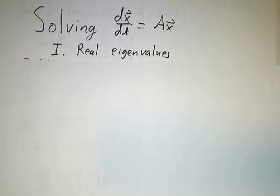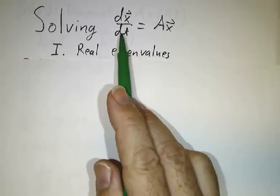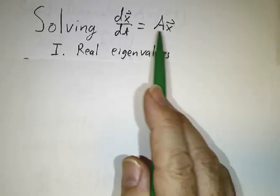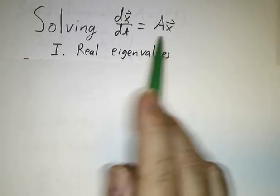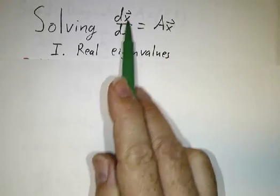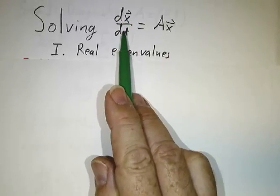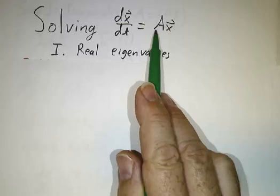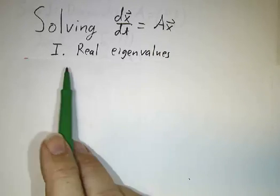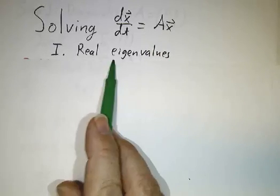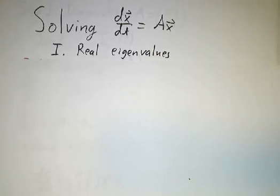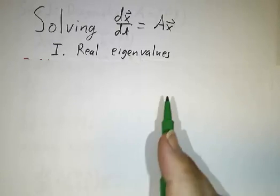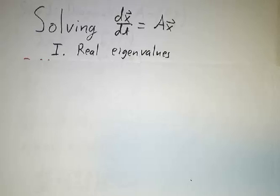This is the first of three videos on solving systems of linear differential equations. Basically, the derivative of a vector with respect to time is some matrix times a vector. In this video, we're going to talk about what happens when the eigenvalues are real. In subsequent videos, we'll talk about complex eigenvalues and about non-diagonalizable matrices.